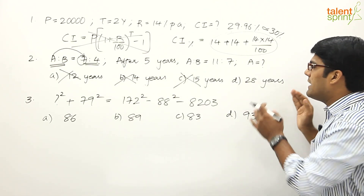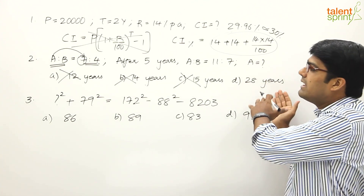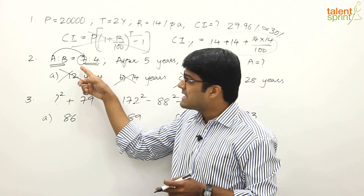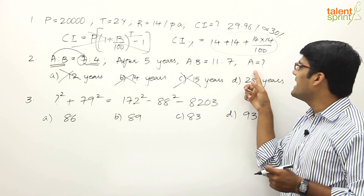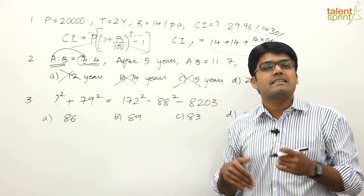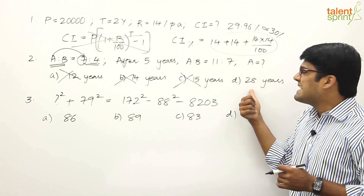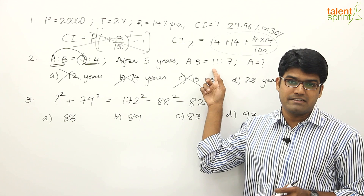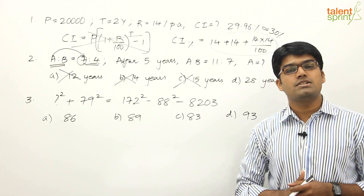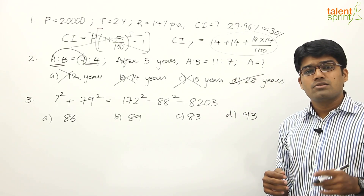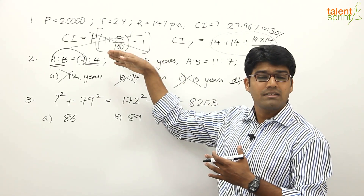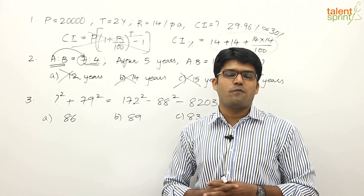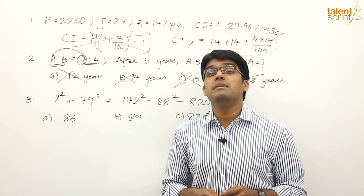Since three options are eliminated, option D — 28 years — must be correct. Let's verify: 28 is a multiple of 7 ✓. After 5 years, A = 33, and 33 is a multiple of 11 ✓. Both conditions are satisfied, confirming 28 years is correct. This is the substitution method: substitute answer options back into the question and find which one satisfies all given conditions.